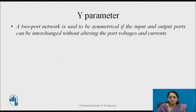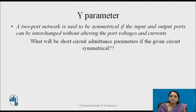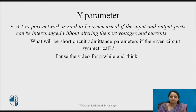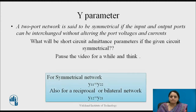A two-port network is said to be symmetrical if the input and output ports can be interchanged without altering the port voltages and currents. For a symmetrical network, the condition for Y parameters is Y11 equals Y22. Also, if Y12 and Y21, the transfer admittances, are equal, then the two-port network is said to be reciprocal or bilateral.